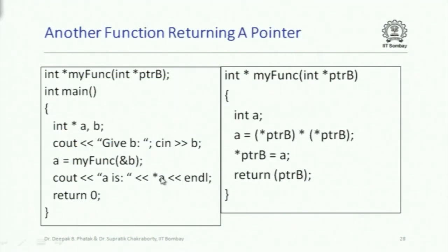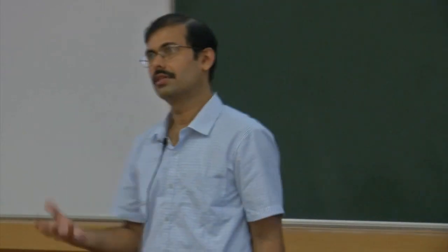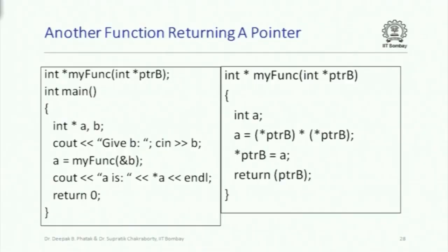Here is a safe alternative - a function that takes an integer pointer and returns that same integer pointer after squaring the integer value there. If I passed the address of a local variable b from main, my_func squares the value of b, stores it back in b, and returns the same pointer. So a now contains the address of b which is a local variable of main. When I do star a, I actually get the value of b after the update - this is a legitimate dereferencing.